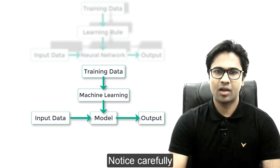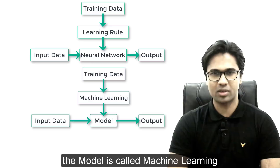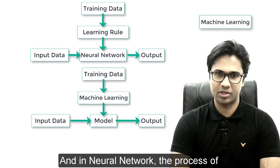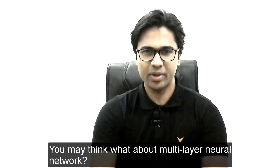We have neural network in place of model, and learning rule in place of machine learning. In machine learning, the process of determining the model is called machine learning, and in neural network, the process of determining the neural network is called learning rule. In this lecture, we will learn the learning rule of single-layer neural network.